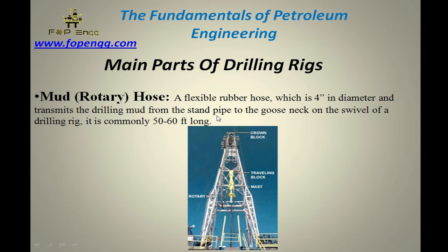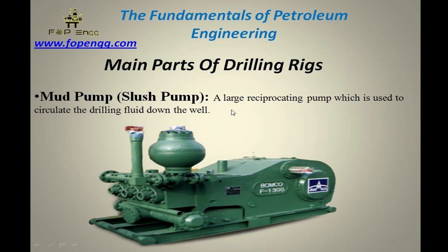Mud rotary hose — a flexible rubber hose of four-inch diameter that transmits the drilling mud from the standpipe to the gooseneck on the swivel of a drilling rig. It is commonly 50 to 60 feet long. The standpipe is connected here and it is used to transfer fluid from the rig floor to the tanks or other locations.